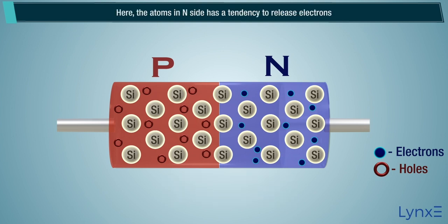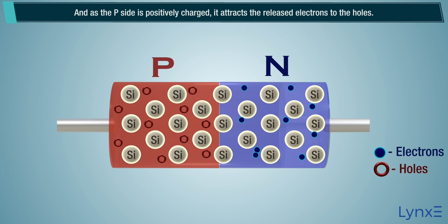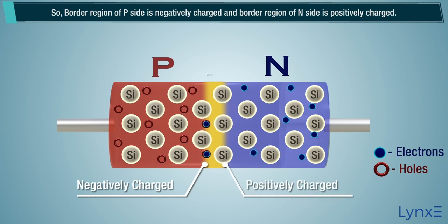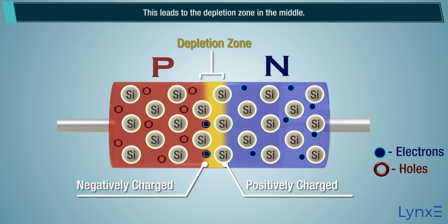Here, the atoms in N side has a tendency to release electrons, and as the P-side is positively charged, it attracts the released electrons to the holes. So, border region of P-side is negatively charged and border region of N-side is positively charged. This creates the depletion zone in the middle.